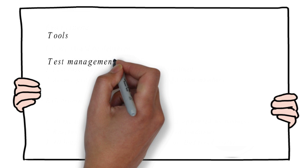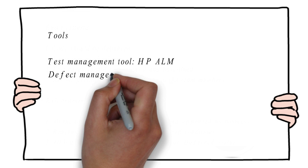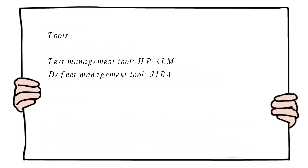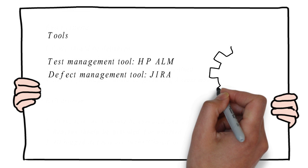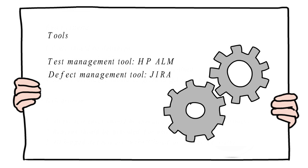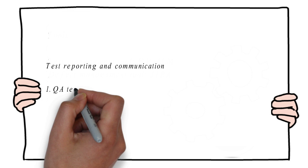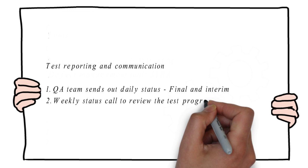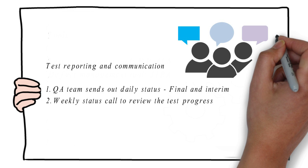The next component is tools. If there are any tools planned to be used in the project, those details are defined here. In our case, for keeping requirements and test cases in a system, we are using HP ALM, so that it is visible to multiple stakeholders. For managing defects, another tool is used — in our example, we are using Jira as a defect management tool. Using this tool, testers raise defects and developers review and fix them. The next component is test reporting and communication, where the communication process for testing progress is defined — for example, the QA team sends out daily status reports to the client.